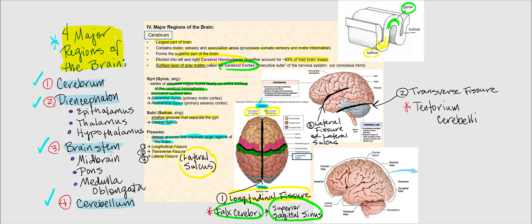In addition to the superior sagittal sinus, we also find the inferior sagittal sinus along this longitudinal fissure. The next fissure is the transverse fissure. Within this transverse fissure, we find another dural fold referred to as the tentorium cerebelli.